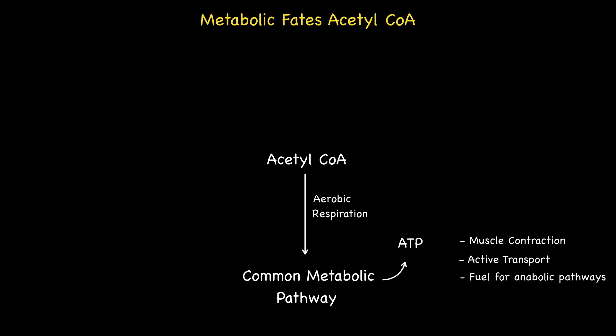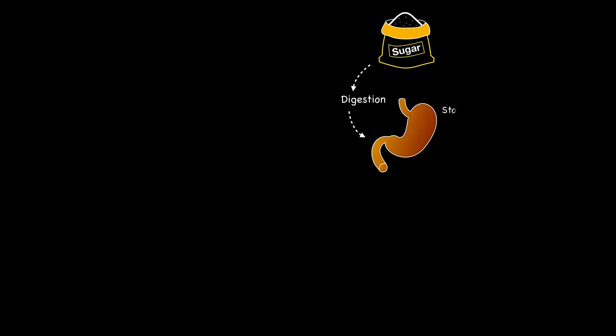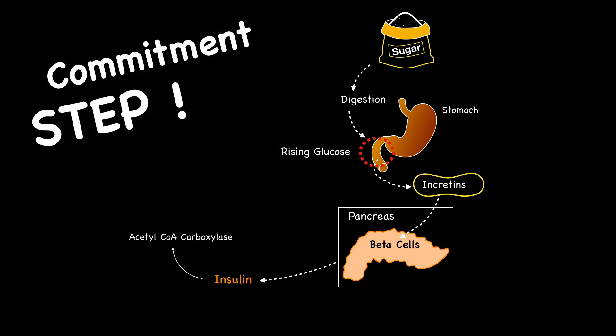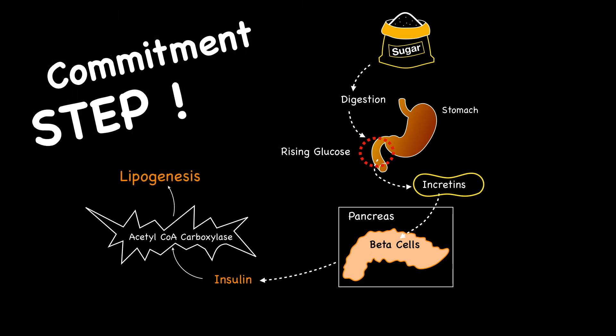Let's now look at a second fate for Acetyl-CoA — the anabolic process known as lipogenesis, which occurs during the fed state and leads to the formation of fatty acids, which are subsequently converted into triacylglycerols, also known as TAGs. Lipogenesis is especially rampant if carbohydrate intake is very high. The presence of elevated glucose within the small intestine stimulates the release of the incretin hormones, which are responsible for insulin being secreted by the pancreas. Rising levels of insulin stimulate the production of the enzyme Acetyl-CoA carboxylase, which activates lipogenesis and the production of fatty acids — sometimes termed the commitment step.